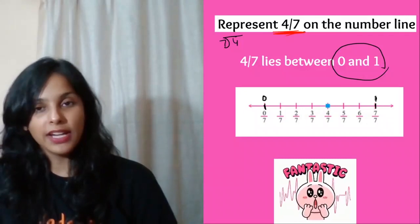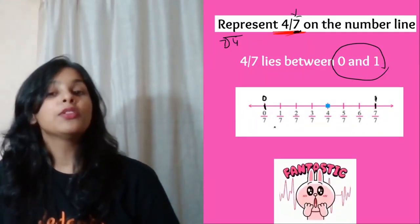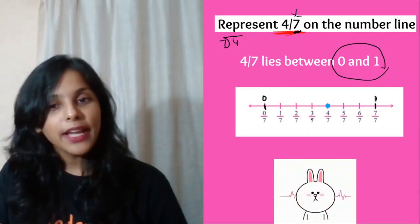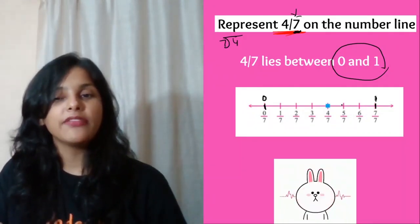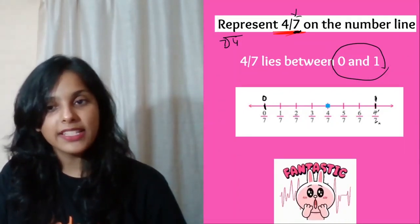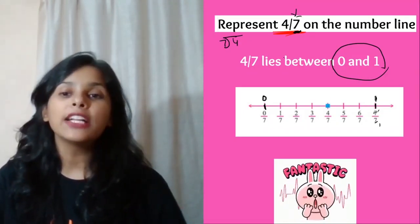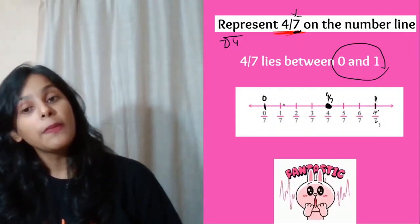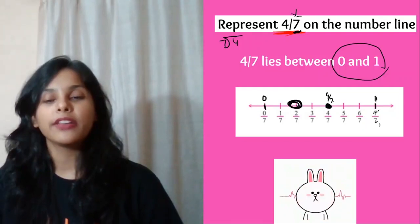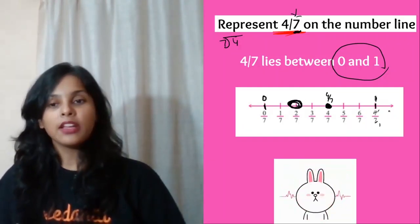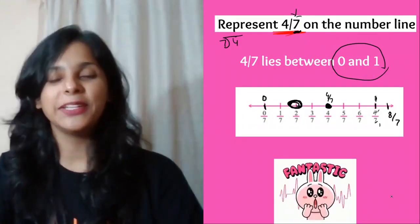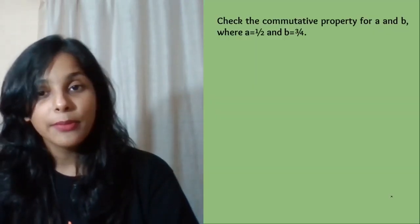Divide the portion between 0 and 1 into 7 equal parts — whatever number is in the denominator. This gives 1 by 7, 2 by 7, 3 by 7, 4 by 7, 5 by 7, 6 by 7, and 7 by 7 which is 1. Mark 4 by 7 at the fourth point. For 2 by 7, mark the second point. For 8 by 7, extend one more point beyond 1.